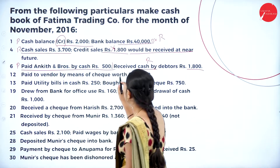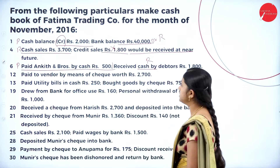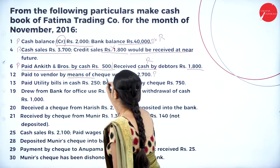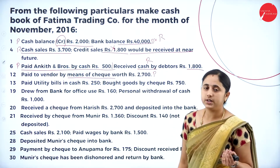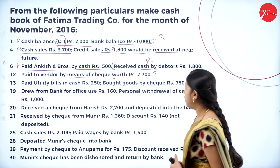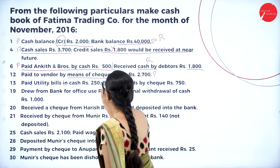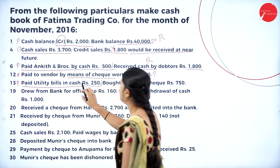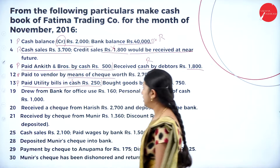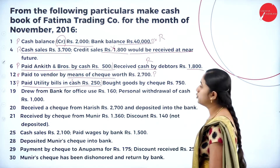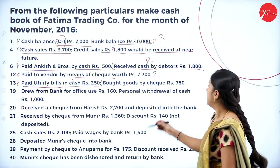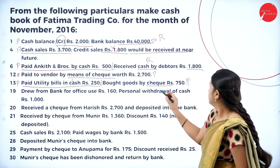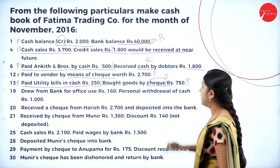Next, paid to vendor by means of cheque worth rupees 2700. This is a payment, so write on the payment side — by vendors account, 2700 in the bank column, since payment is by cheque. Next, paid utility bill in cash 250 — payment side, utility bill account, 250 in the cash column. Next, bought goods by cheque rupees 750 — purchase means payment, cash going out through cheque, so amount in bank column, 750.